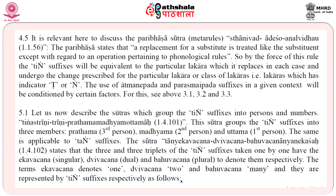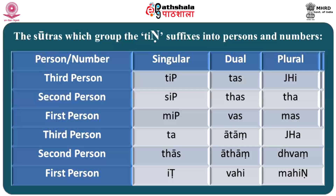Sutra Tanek Vachana Divachana Bahuvachana Nekasha 1.4.102 states that three triplets of the Ting suffixes have, one by one, Ekavachana (singular), Divachana (dual), and Bahuvachana (plural) to denote them respectively. The terms Ekavachana denotes one, Divachana denotes two, and Bahuvachana denotes many. They are represented by the Ting suffixes as follows. Third person: Tip (singular), Thas (dual), Jhi (plural). Second person: Sip, Thas, Tha. First person: Mip, Vas, Mas.